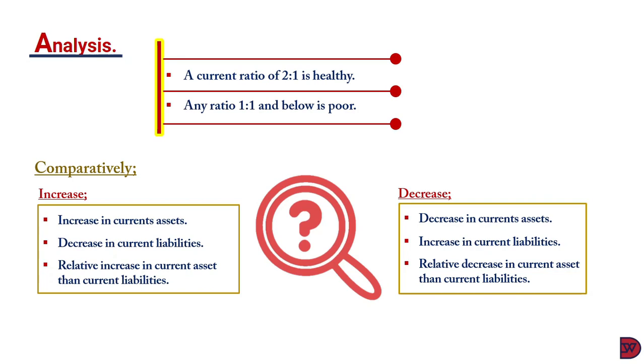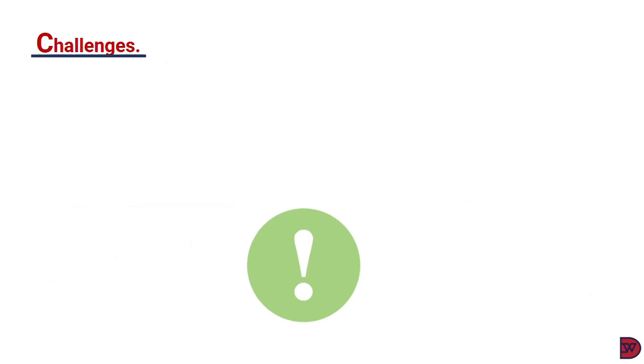Challenges with current ratios: when there is an increase in the current ratio and the reason being that the current assets for that period increase, it does not always show a positive light. For example, receivables can be manipulated. Businesses can decide to give sales on credit to receivables, increasing that region, causing the current asset to increase.